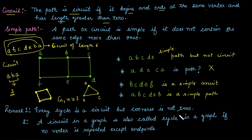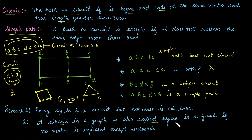The converse is not true: there are circuits that are not cycles. A circuit in a graph is called a cycle if no vertex is repeated except the endpoint, and n is greater than or equal to three.